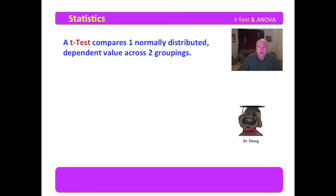A t-test compares one normally distributed dependent variable across two groupings. For instance, we might compare a normally distributed variable, we might call it, say, age, across the groupings of male and female. Age would be the dependent value, and the groupings would be male or female.